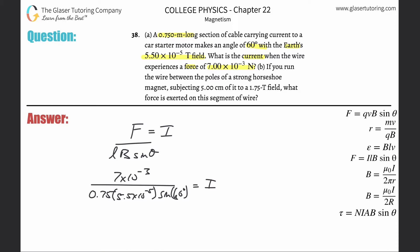Simply take out your calculator. 7 × 10^-3 divided by (0.75 × 5.5 × 10^-5 × sin 60). Please be careful, make sure your calculator is in the right mode. When we do the rounding, this is 196 amps equal to the current. That's letter A.